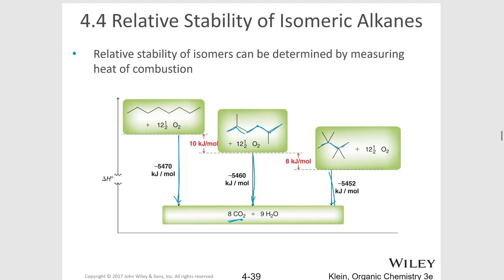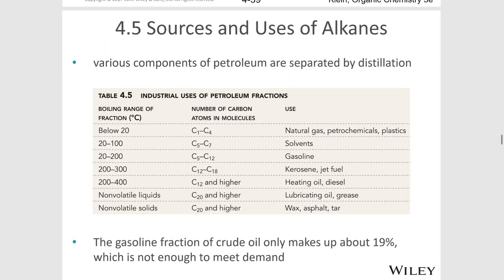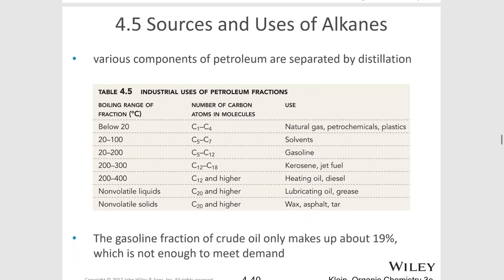So the more branched the isomer, the more stable it's going to be. Alkanes with a boiling point below 20°C — that's roughly C1 to C4 — are used in natural gas, petroleum, and plastics. That includes methane, ethane, propane, and butane.